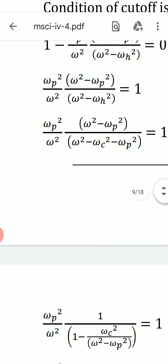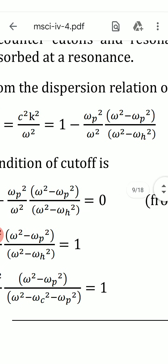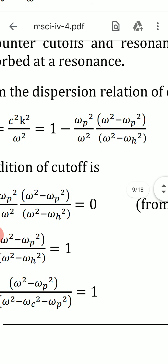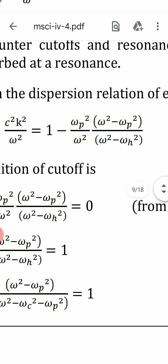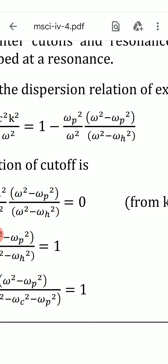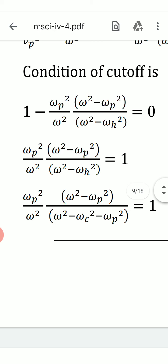Setting the right-hand side equal to 0: 1 − ωp²(ω² − ωp²) / [ω²(ω² − ωh²)] = 0. This gives ωp²(ω² − ωp²) / [ω²(ω² − ωh²)] = 1. Now substituting ωh² = ωc² + ωp² into the denominator to simplify.